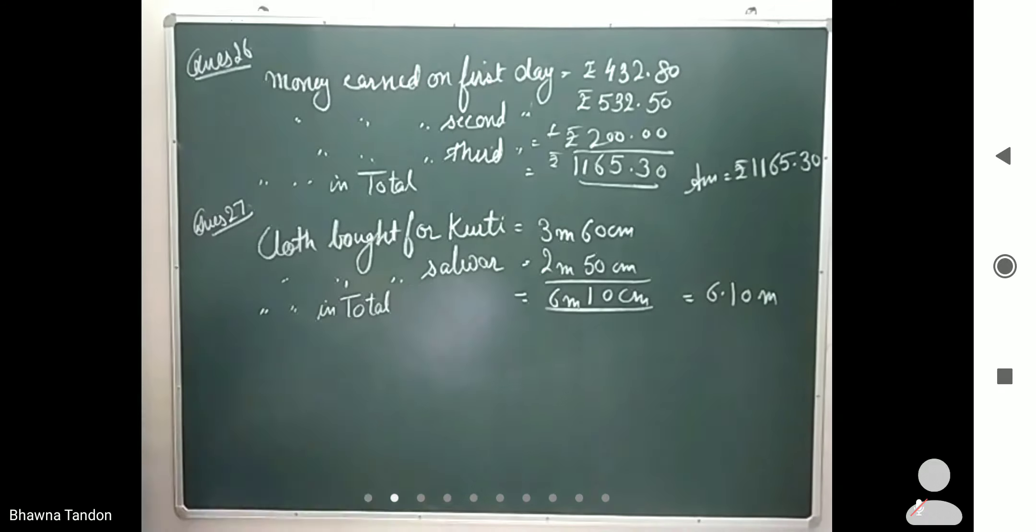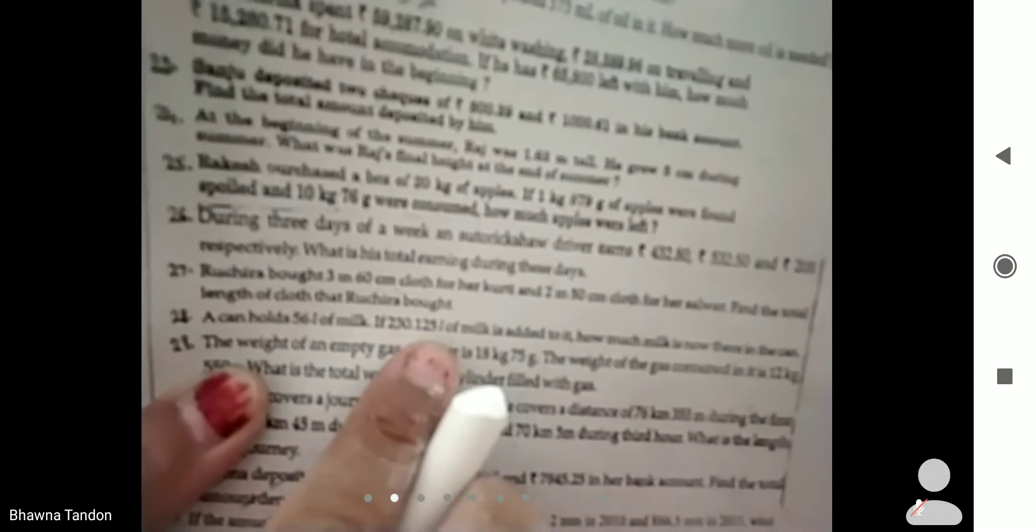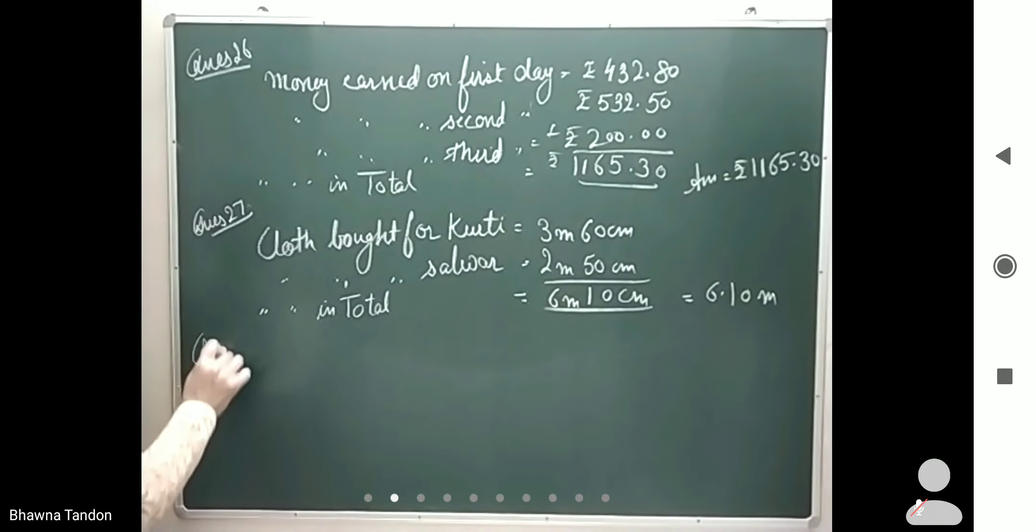Then question number 28: A can holds 56 liters of milk. If 230.125 liters of milk is added to it, how much milk is now in the can? So some milk is added to the can.